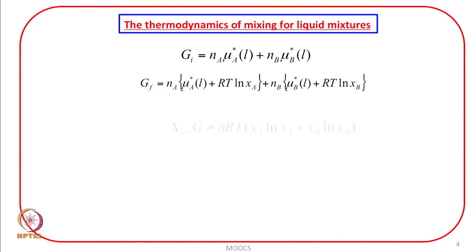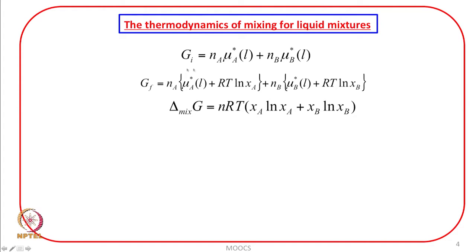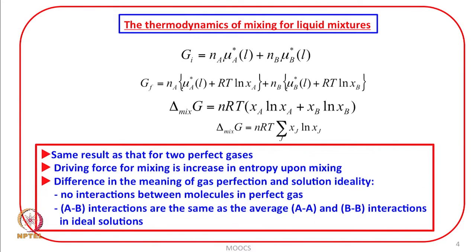By the same arguments as we have discussed for the ideal gases, I can transform this into the form NRT (x_A ln x_A + x_B ln x_B). This is the same result as that for two perfect gases. The entropy of mixing will have the same form as for the gases, and enthalpy of mixing will also turn out to be 0. That means the driving force for mixing is increase in entropy upon mixing.